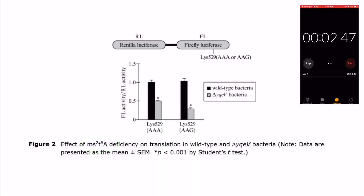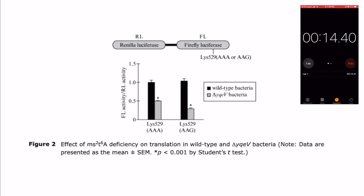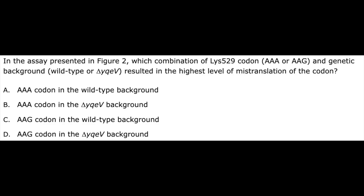Let me show you how I interpret a graph in this amount of time. 'Effect of this deficiency on translation in wild type and deficient bacteria, data presented as...' and some significance. So when they're divided like that on the axis, one would mean that they're the same, which is normal in a wild type bacteria. But in the deficient, it looks like there's less firefly luciferase, especially when the lysine is encoded by the triple-A or double-AG codon instead of the triple-A. A lot of that probably didn't make much sense because you didn't read the passage beforehand, but in my mind it totally makes sense and I can answer the question that showed up later because I put in the time to understand this figure.